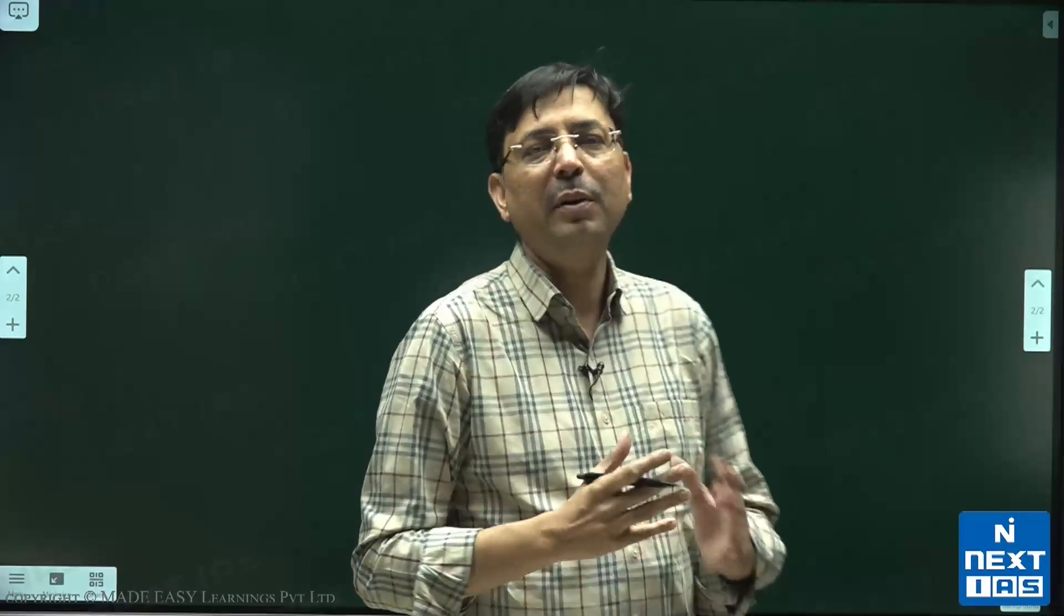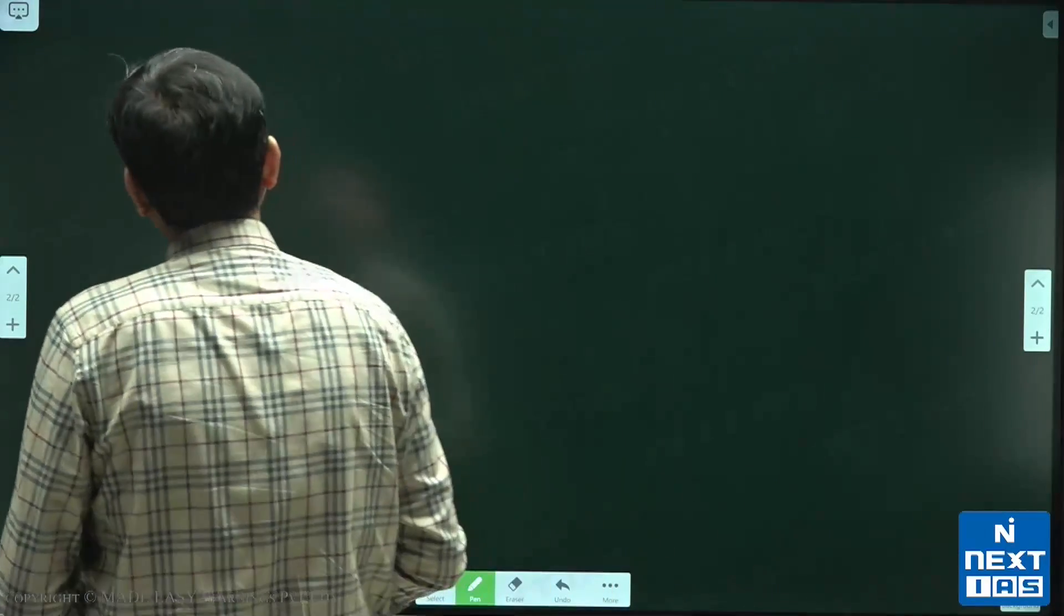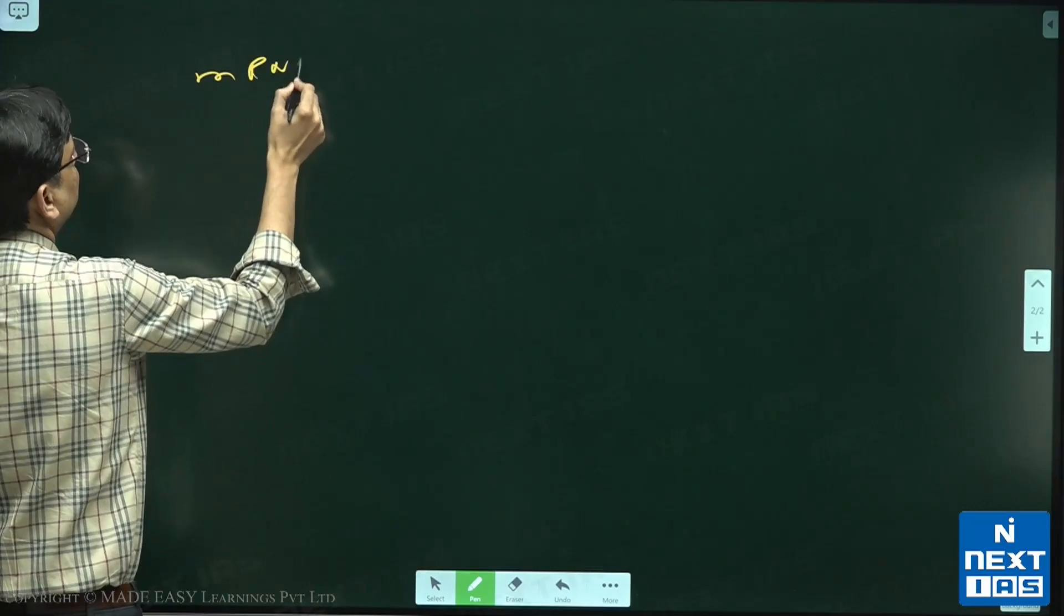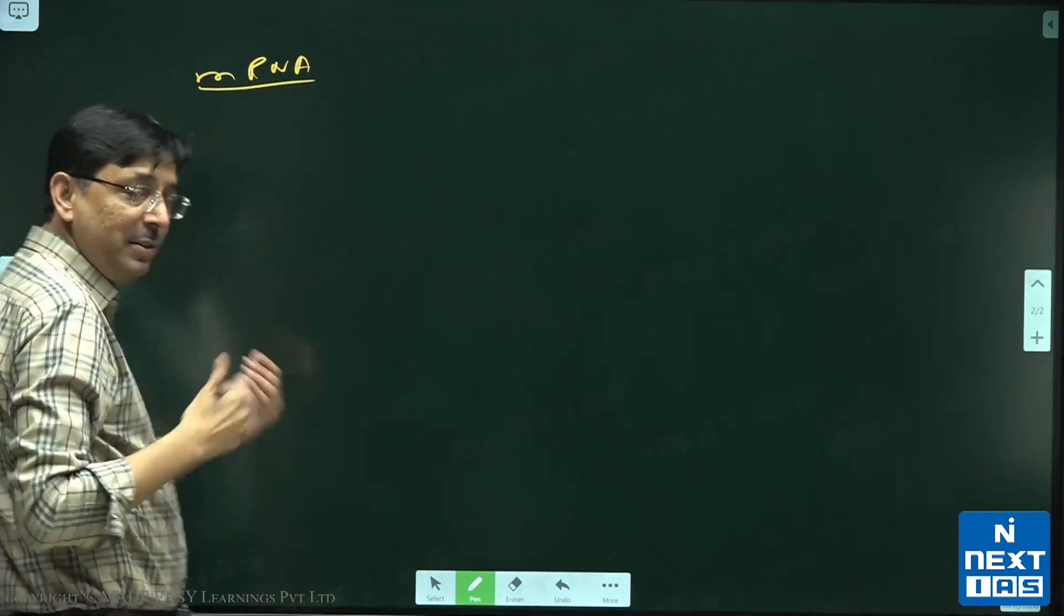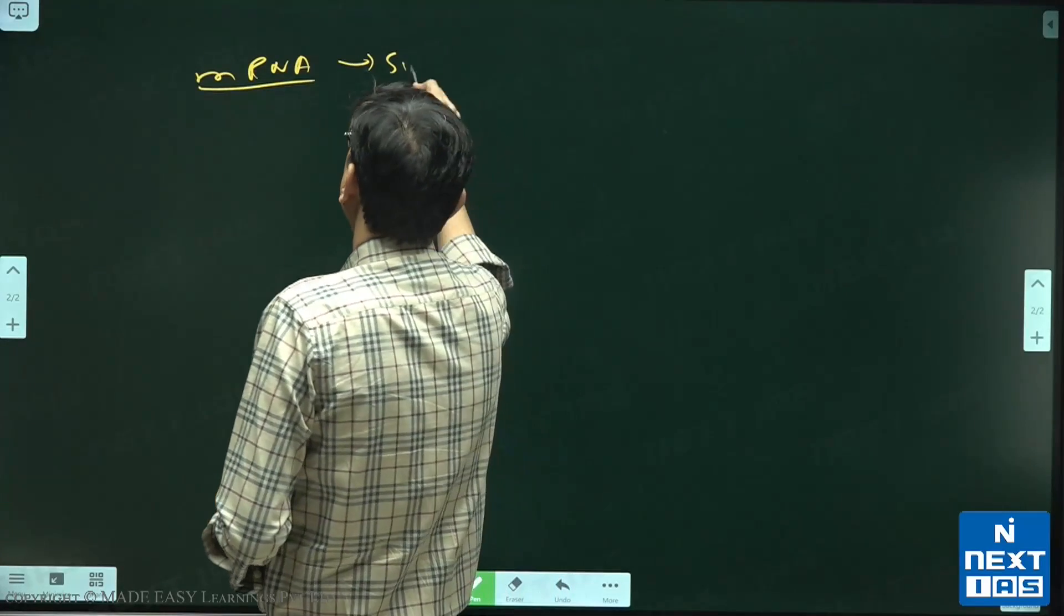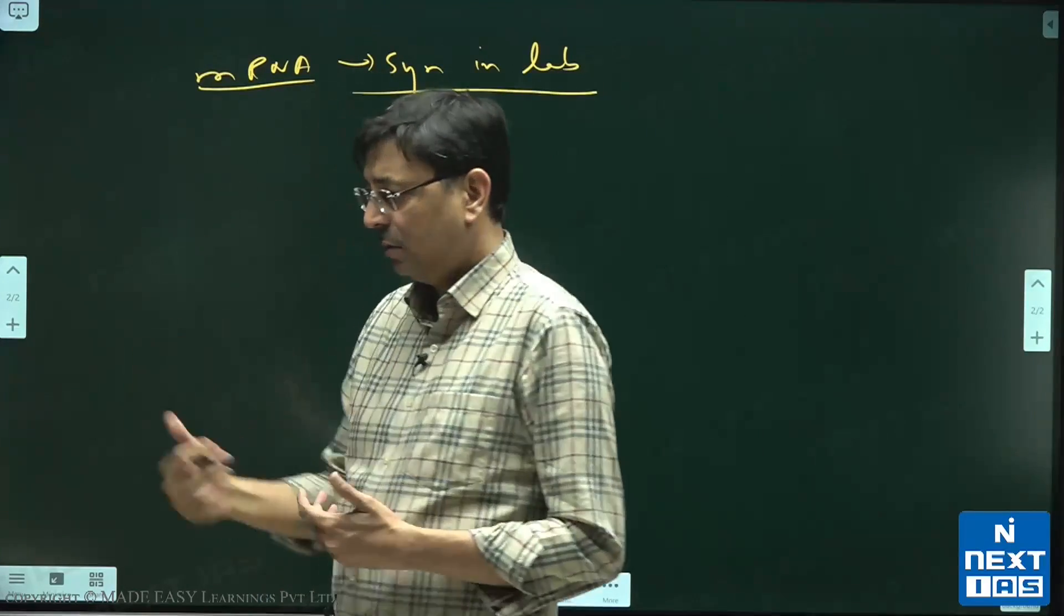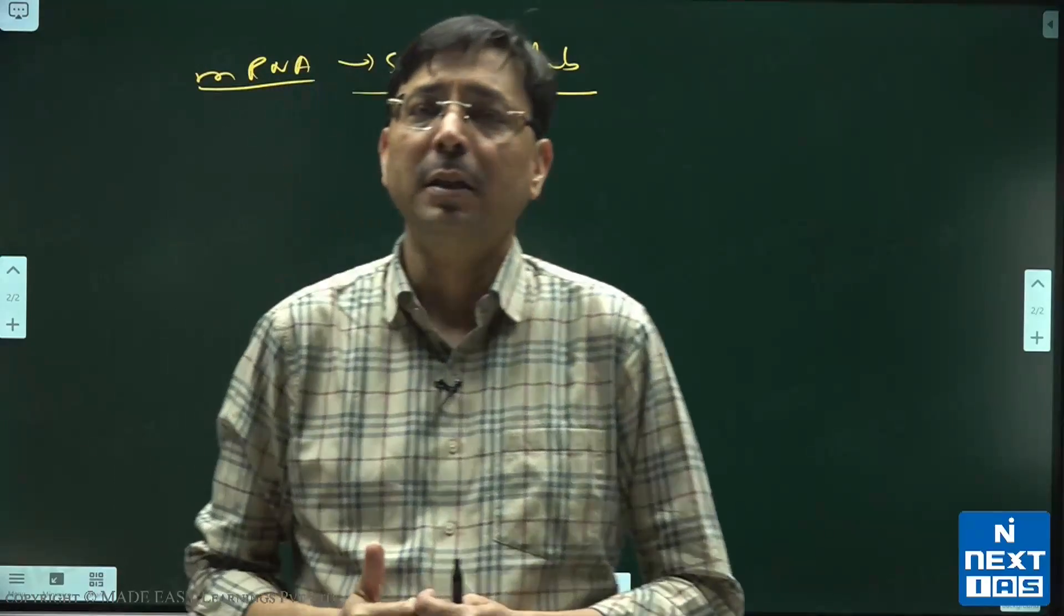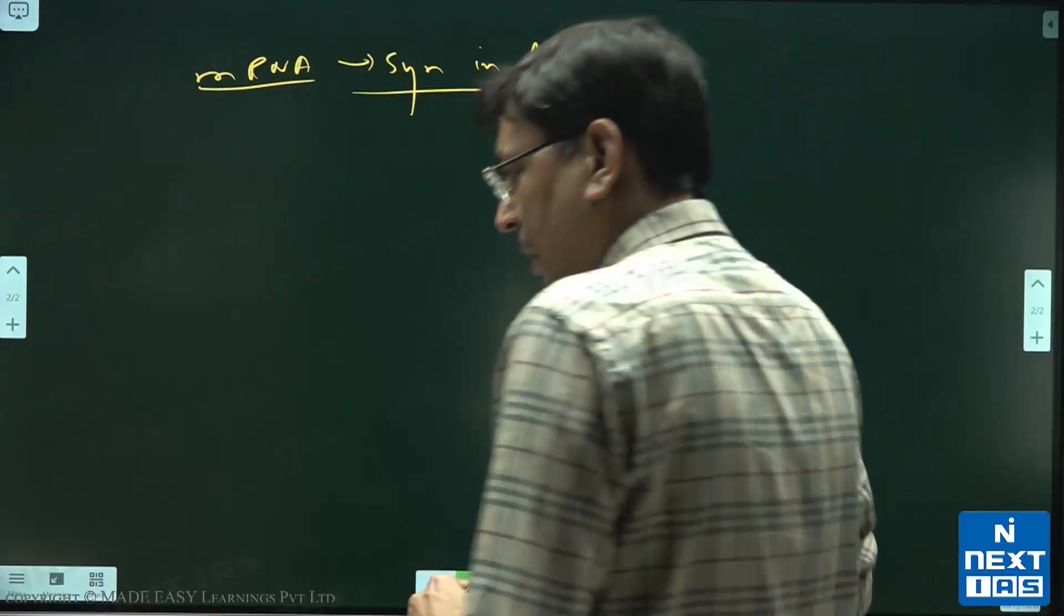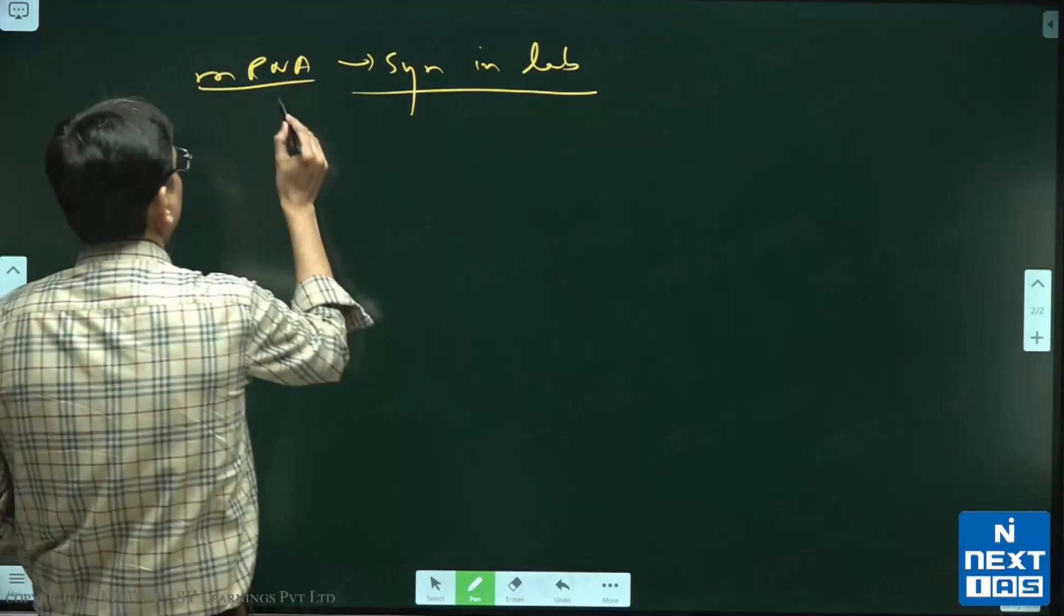Carrico and Weisman, what they did? They synthesized messenger RNA. But when this messenger RNA which was synthesized in lab was used - what happened - they took the rat, and when they injected this messenger RNA in the rat, the rat died.